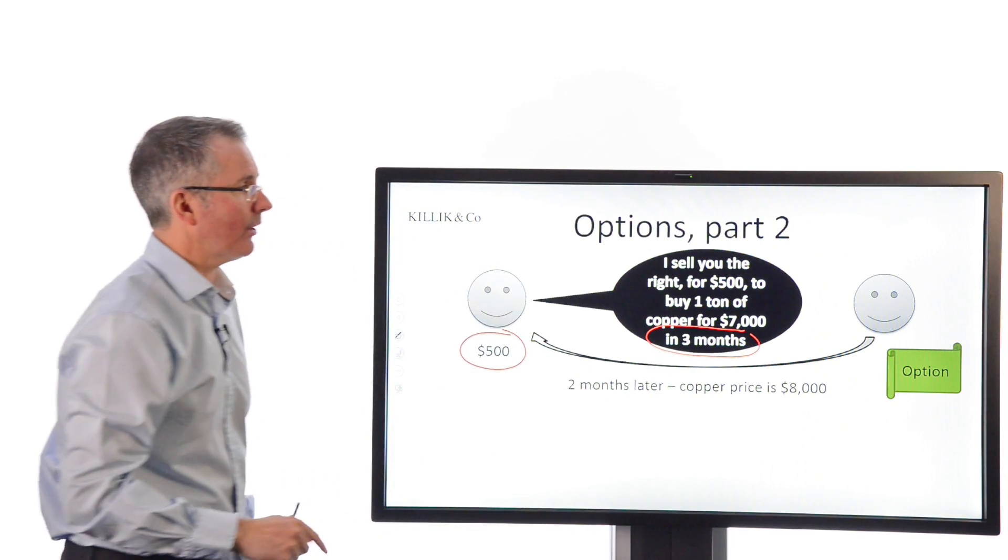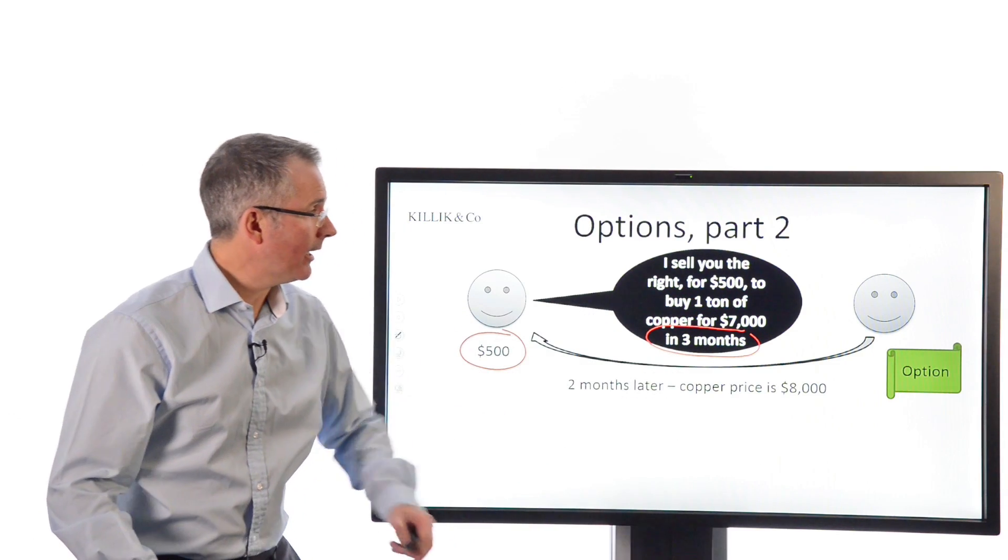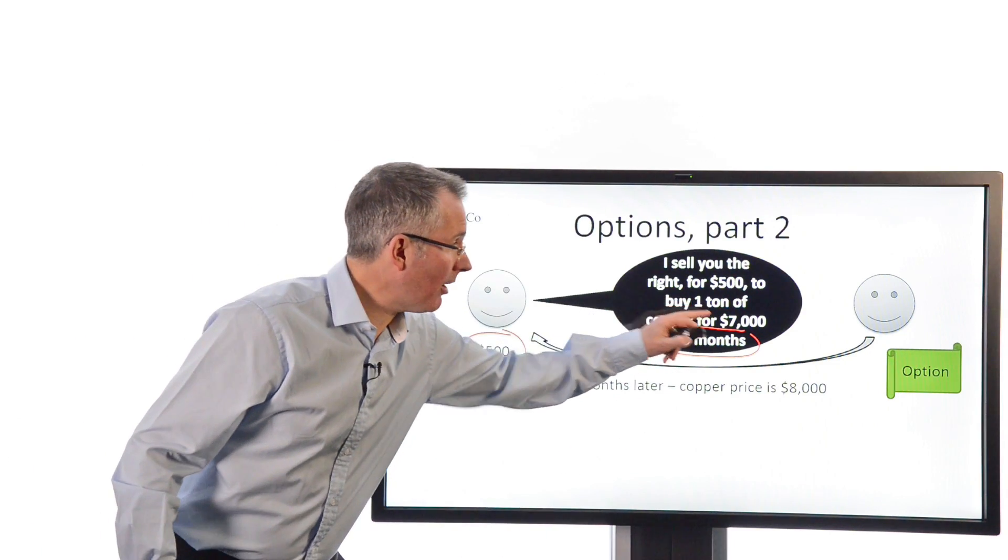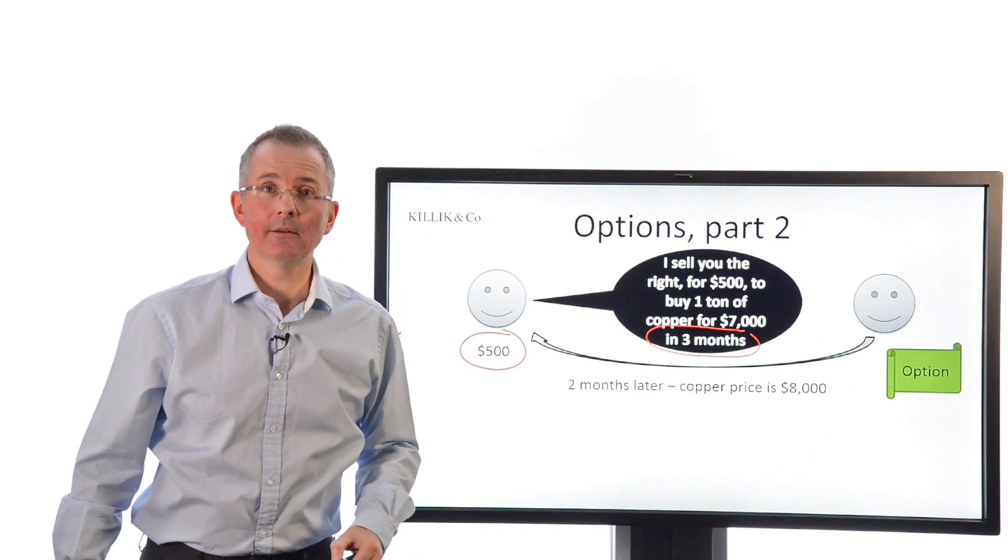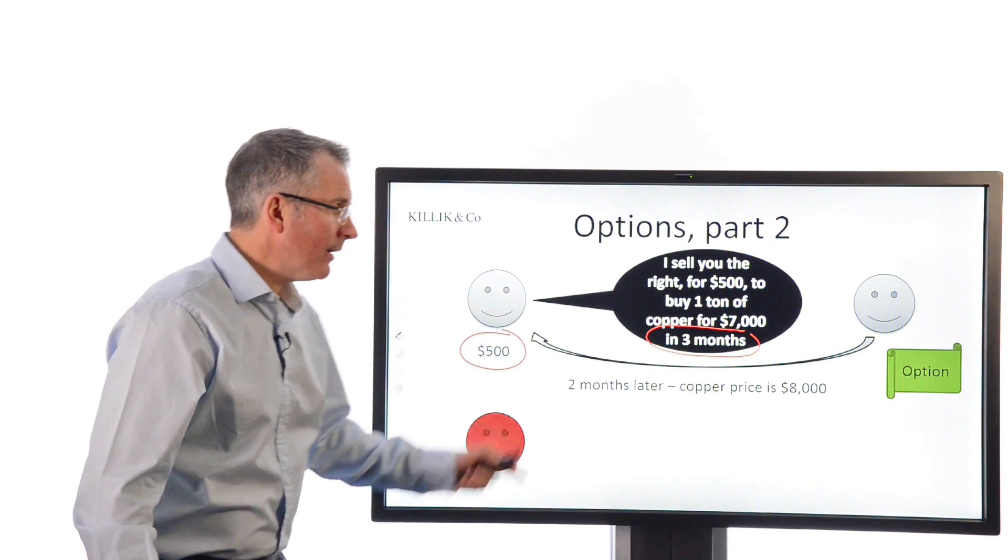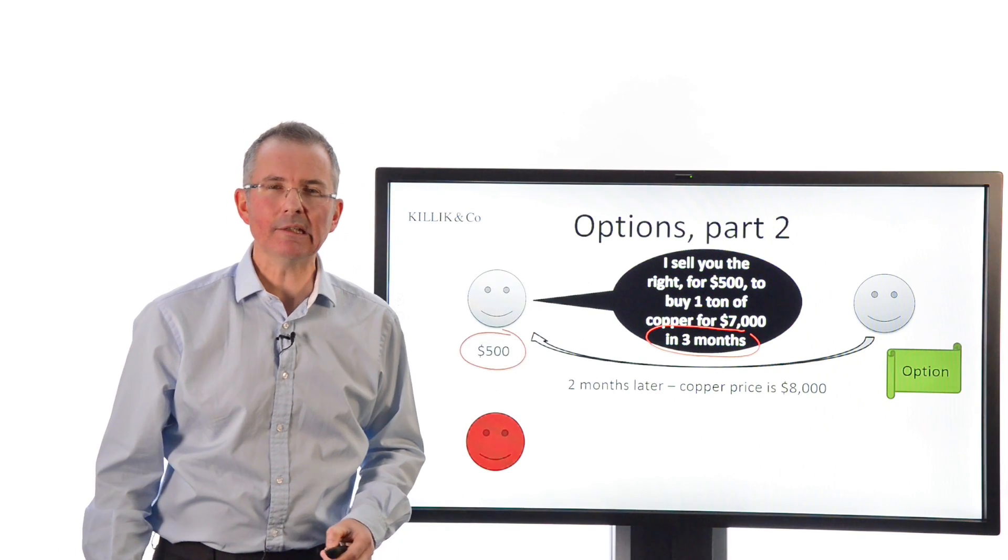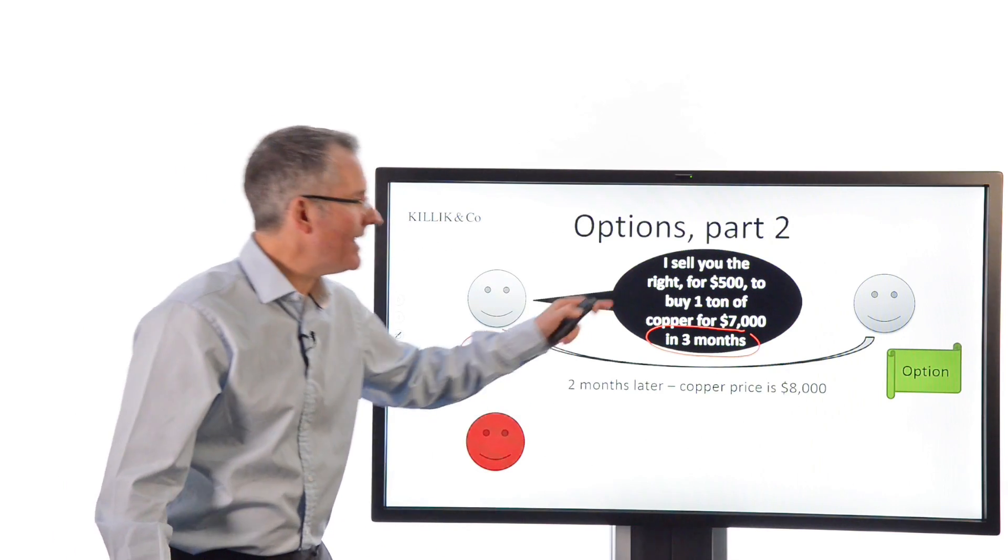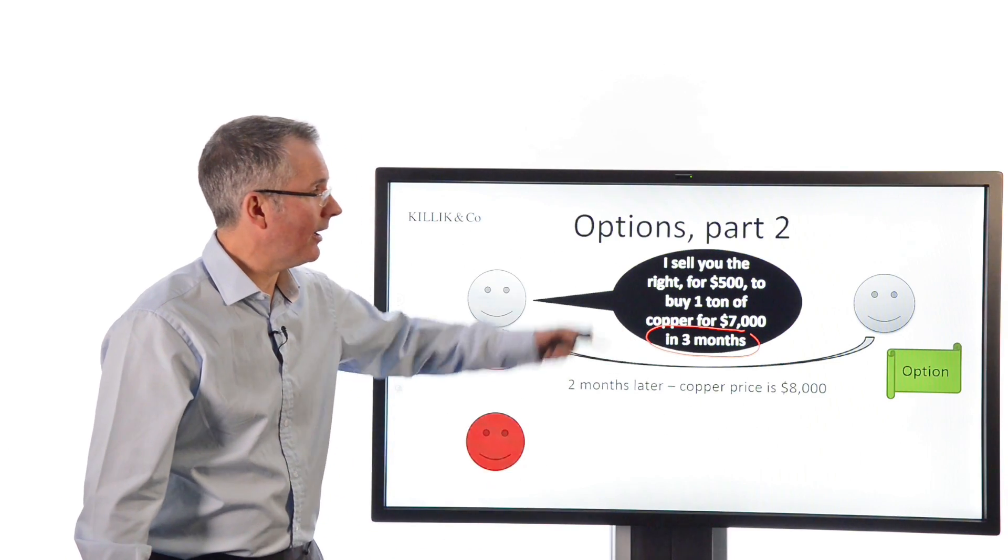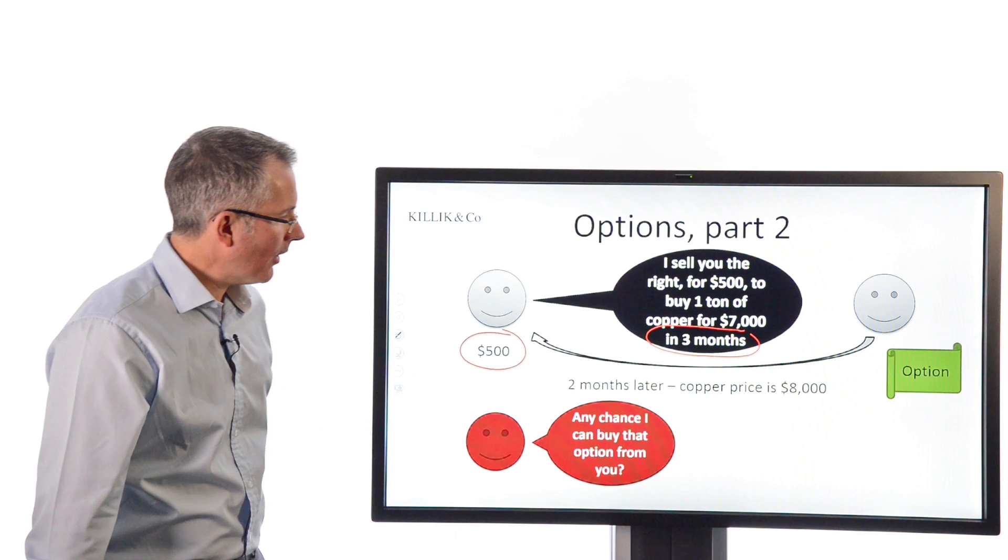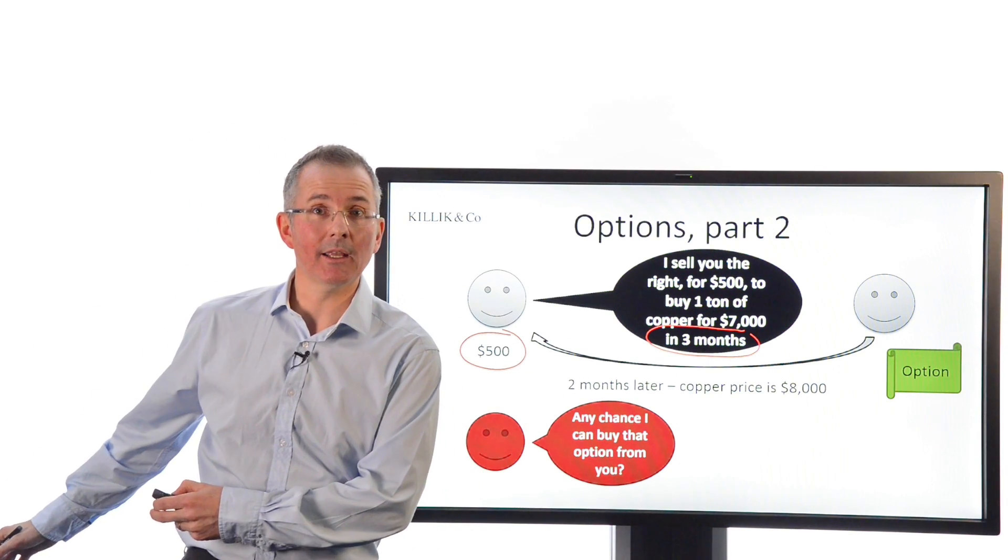Remember, the phone call to get that ton of copper for $7,000 can come in any time in the next three months. You've paid the $500 for that flexibility. But it hasn't come in yet. And two months later, the copper price is $8,000. So this option is already in the money, as they call it. Why? Because it's valuable. To be able to buy on the right-hand side something for $7,000 that's already worth $8,000. Great. There's money there, quite literally. Red-faced option writer on the left-hand side thinking, why did I give anyone the right to buy copper for me for $7,000 when the market price is $8? That's crazy. I should never have done it. So on the left, any chance I can buy the option back? And then put it in a bin, frankly. Any chance I can take out that risk?